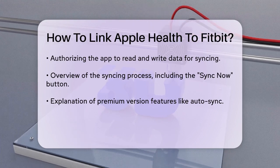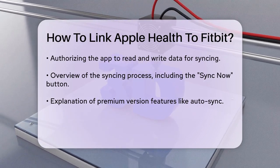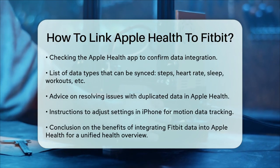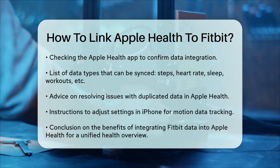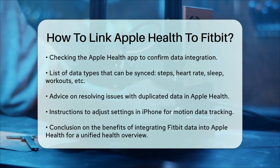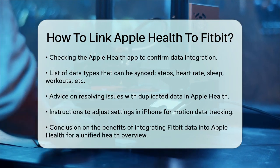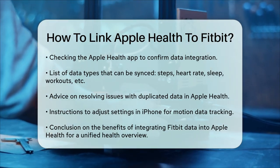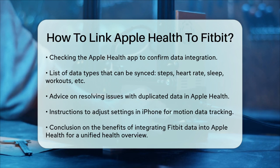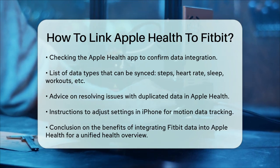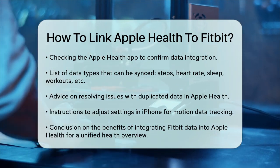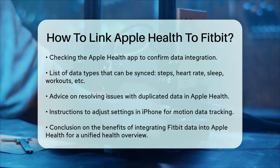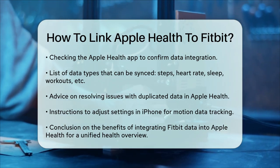The exact data types will depend on the app you choose, but most cover a wide range of health and fitness metrics. If you encounter any issues such as duplicated data in Apple Health, you can adjust the settings to prevent Apple Health from tracking motion data. To do this, go to your iPhone Settings, then to Privacy, scroll down to Motion and Fitness, and disable Apple Health. This way, only your Fitbit data will be tracked and synced.